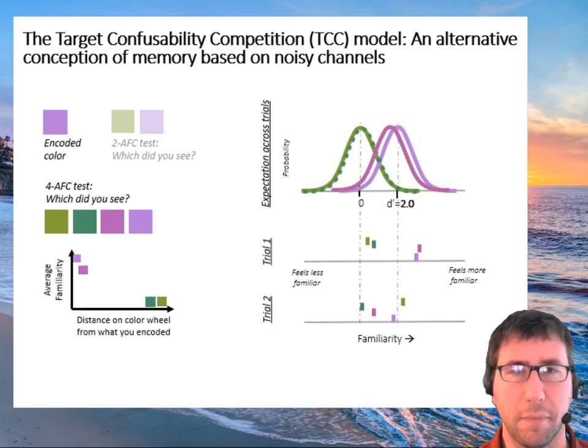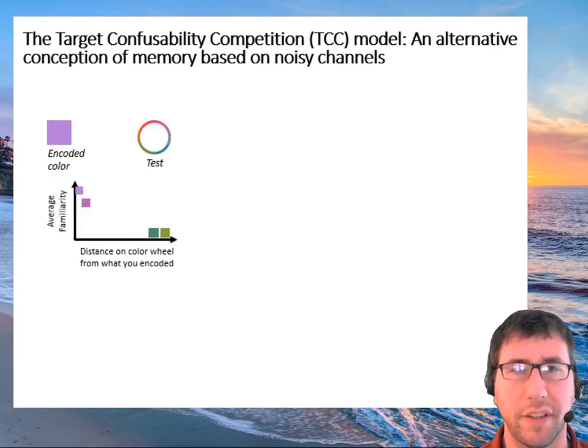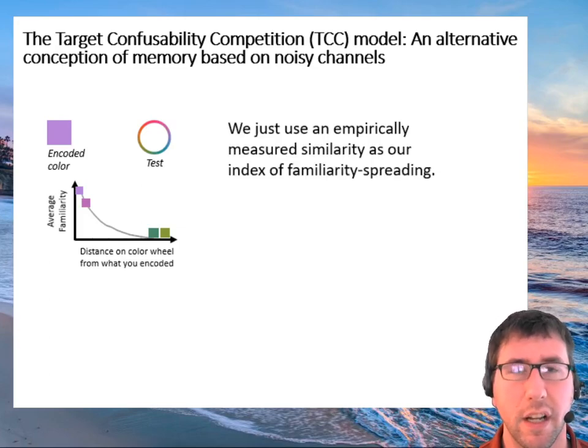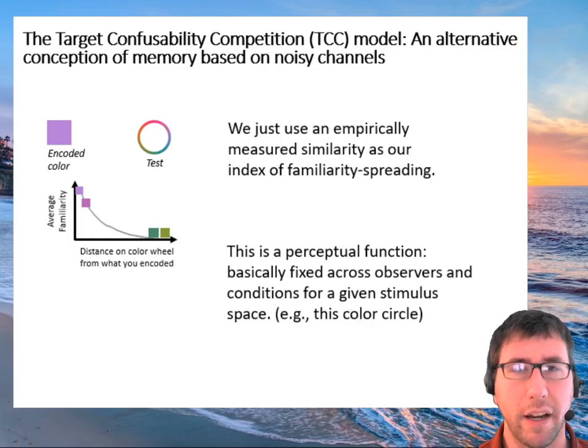I don't think there's anything controversial about this. It must be the case that people make more mistakes choosing dark purple than green in this kind of task. And so the only thing left if you want to generalize this idea to continuous report is just to say what actual shape this function has. How does familiarity get boosted? Which colors get a boost when you see purple? And to measure that, all we do is just measure it empirically using psychophysics. In our hands this looks like just a purely perceptual function. It's basically fixed across observers and conditions for a given stimulus space. It's a description of the color wheel, not so much a description of anything about memory.